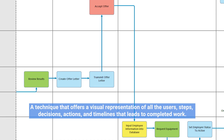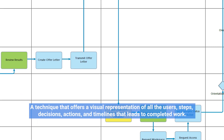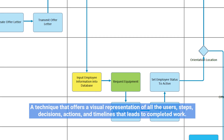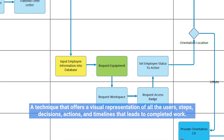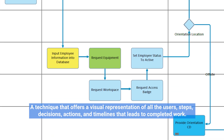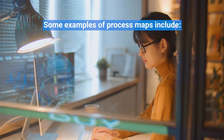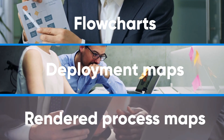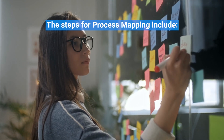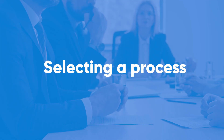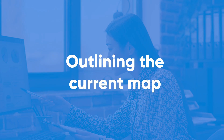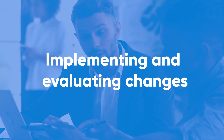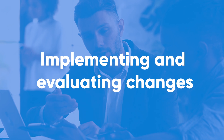Process mapping is a technique that offers a visual representation of all the users, steps, decisions, actions, and timelines that lead to completed work. Some examples of process maps include flowcharts, deployment maps, and rendered process maps. The steps for process mapping include selecting a process, outlining the current map, getting feedback, and implementing and evaluating changes.